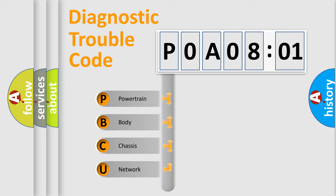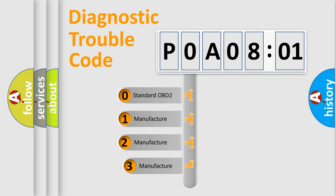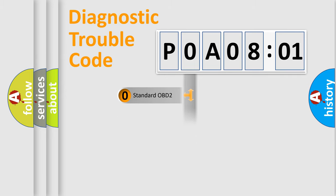If the second character is expressed as zero, it is a standardized error. In the case of numbers 1, 2, 3, it is a car-specific error. The third character specifies a subset of errors. The distribution shown is valid only for the standardized DTC code.